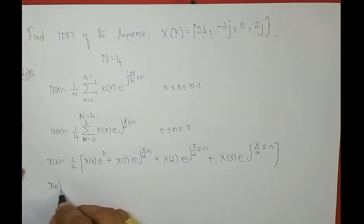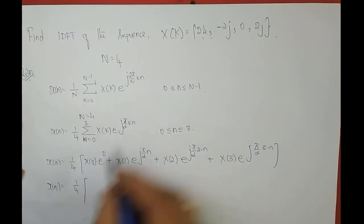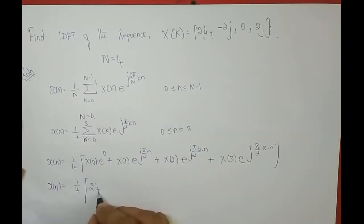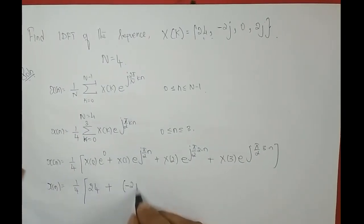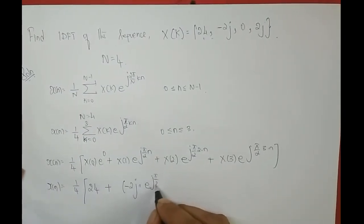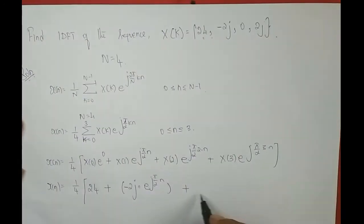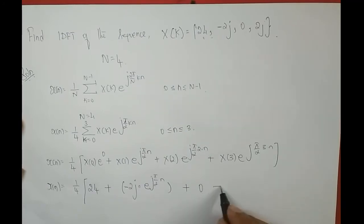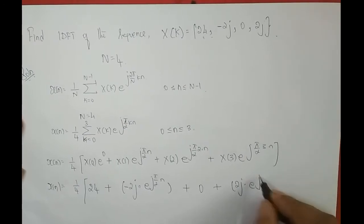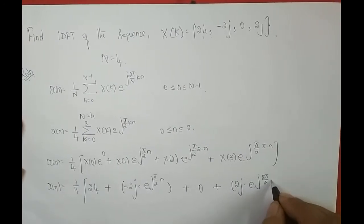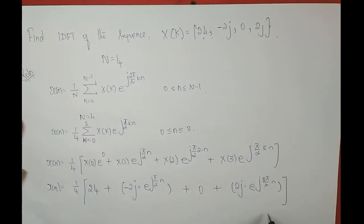Substituting the values of X[k]: x of n = 1/4 × [24 + (−2j)·e^(jπn/2) + 0 + 2j·e^(j3πn/2)]. I will call this Equation 1. Now I will substitute n = 0, 1, 2, 3 since n varies from 0 to 3.